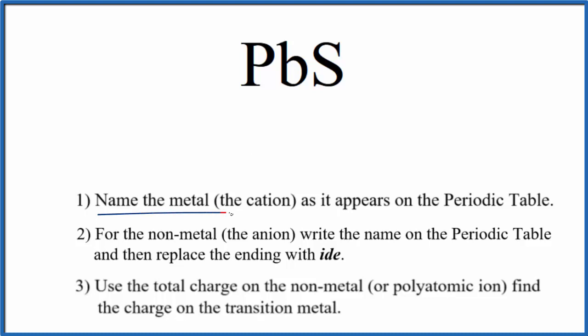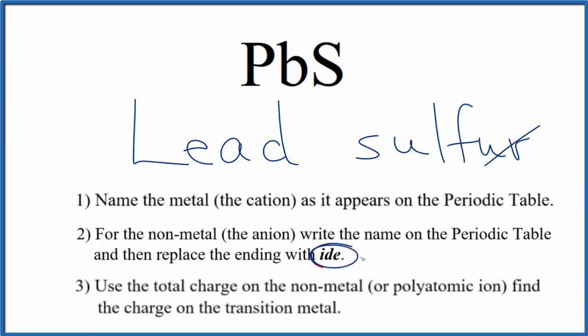First we write the name for the metal as it appears on the periodic table. Pb, that's lead. Next we'll write the name for the non-metal as it appears on the periodic table. So S, that's sulfur, and then we replace the ending, this U-R, with I-D-E.